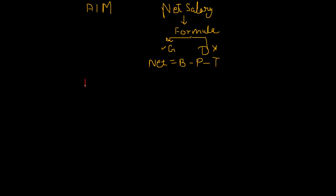The next thing I have to do is the data collection part — how we get the values of different variables. First we see the value of basic: whether the value of basic is given to us, whether any criteria is given for finding it, or we have to take it from the user. In this question, the value of basic salary is not given and no criteria is given, so we have to take the value of basic from the user.